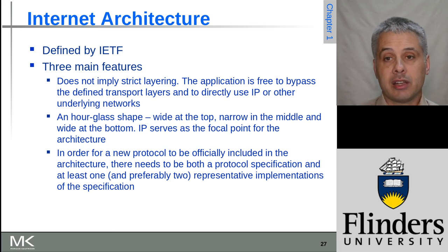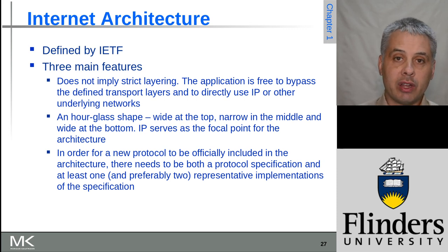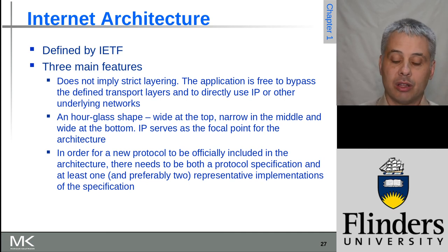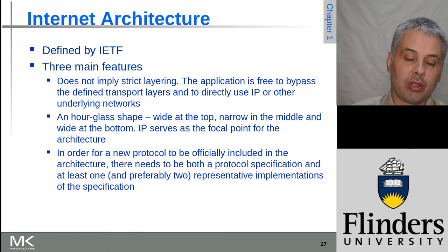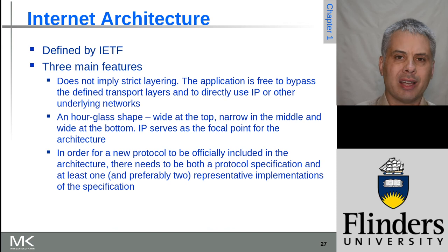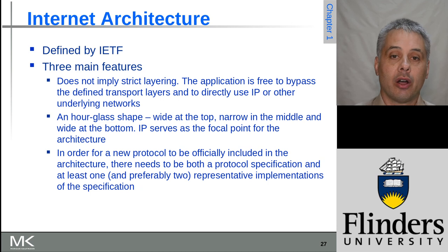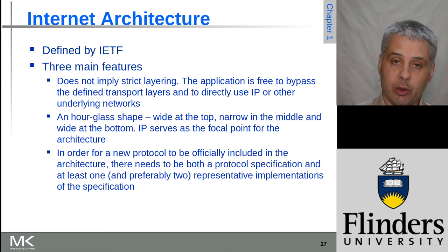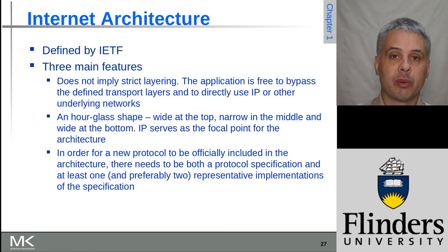That's it for the OSI and internet architecture. You'll do well to learn those seven OSI layers in particular, because whichever course you're taking you're almost certain to get questions on those in assessment. It's also really helpful to have that understanding of what an idealized network layer setup would look like. Any questions — drop them in the comments below and we'll do our best to answer them. We'll see you in the next video.